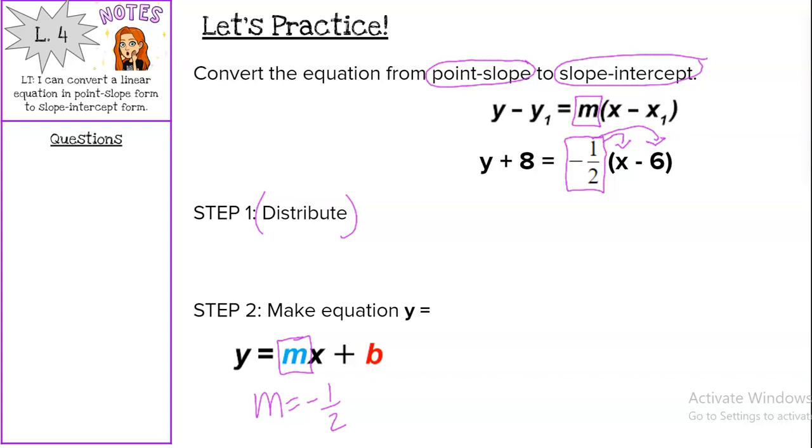So we have negative 1 half times x is just negative 1 half x. And then we have negative 1 half times, remember, this is a negative 6. So a negative times a negative is a positive 1 half times 6, which really is just saying, hey, what's half of 6? Half of 6 is 3.